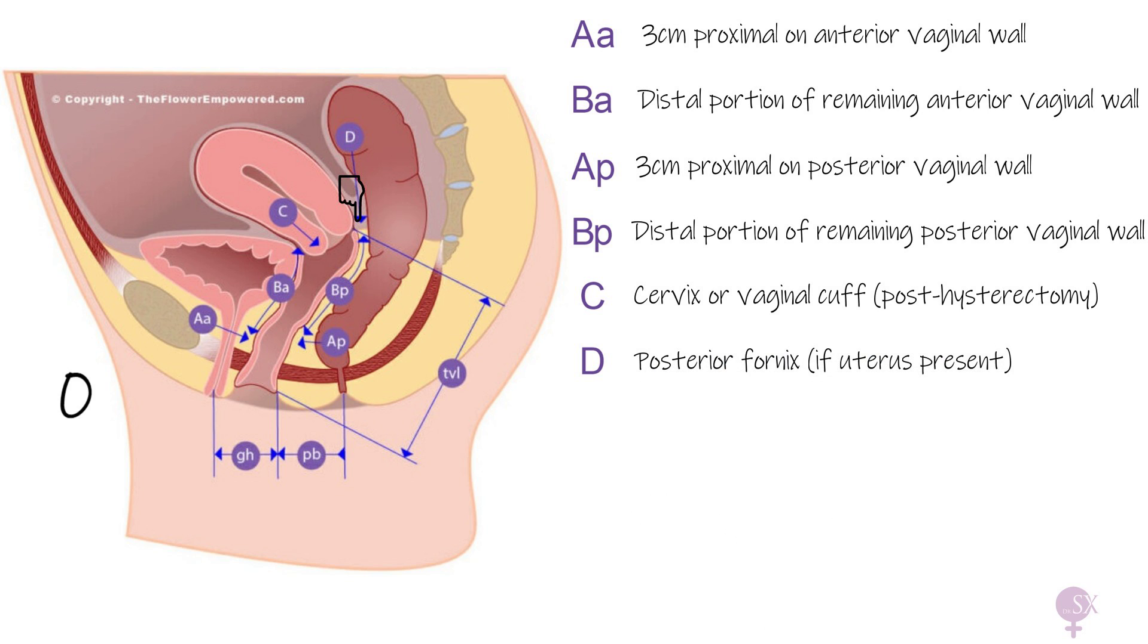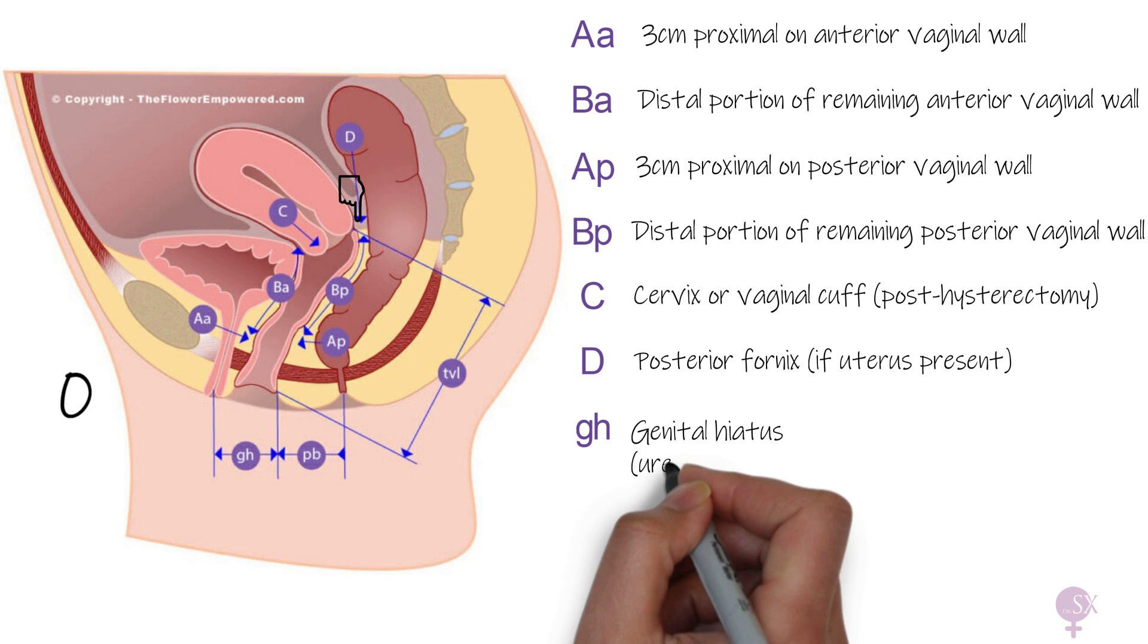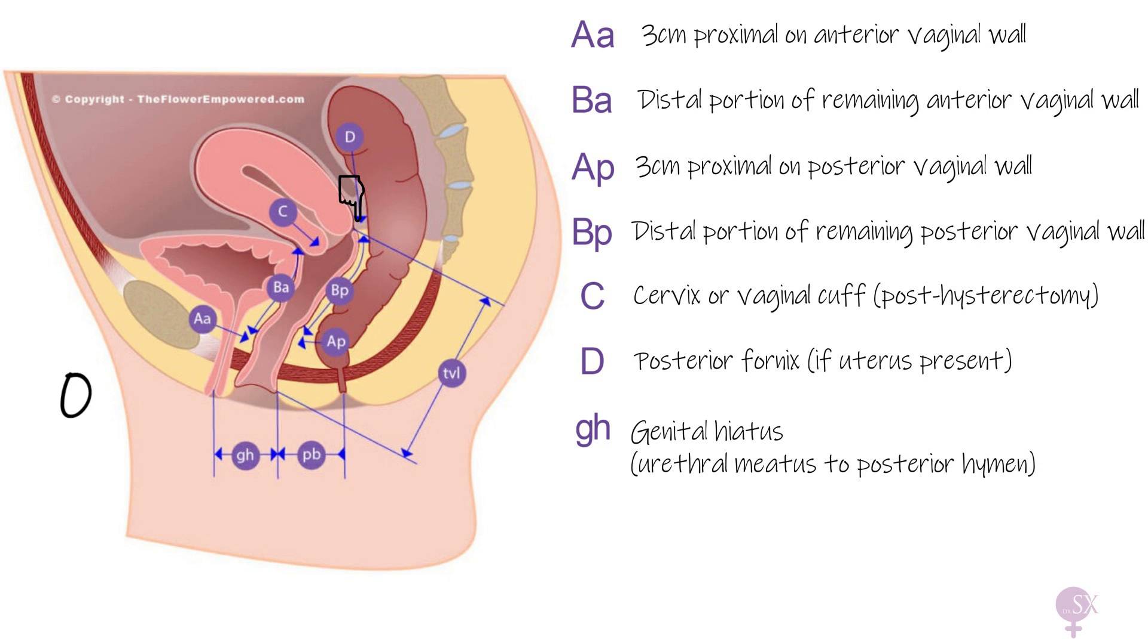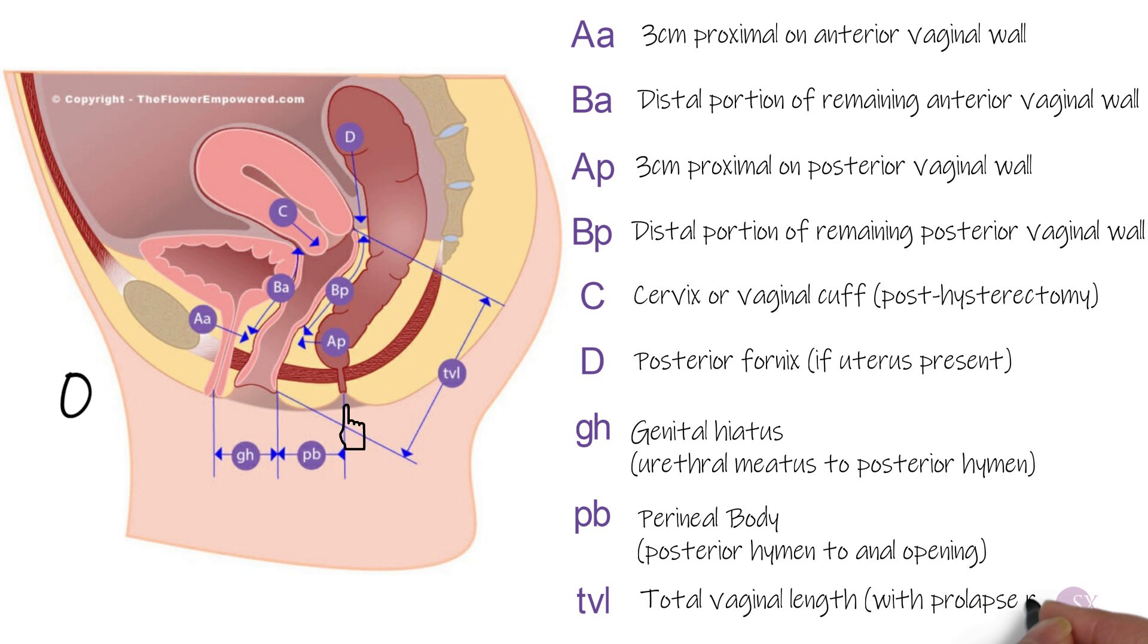GH refers to the genital hiatus, which is measured from the middle of the external urethral meatus to the middle of the posterior hymen. PB refers to the perineal body and is measured from the posterior hymen to the middle of the anus. TVL refers to the total vaginal length, which can be measured when point C or D are in their normal place.